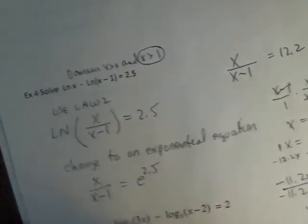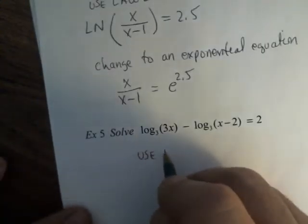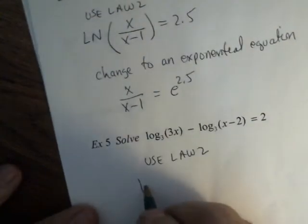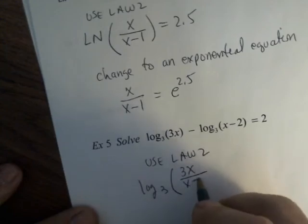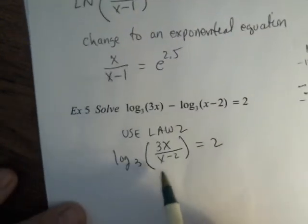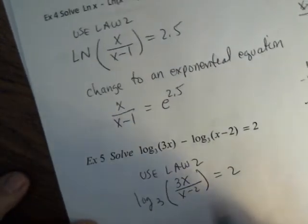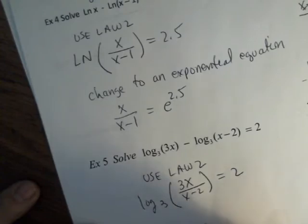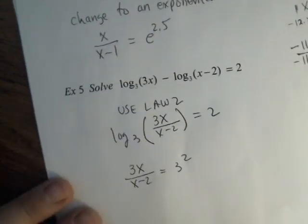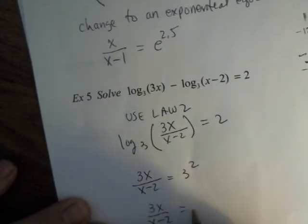Let's look at another one. All right. So, our next example, we do have another difference, which means we're going to use law 2. And I'm going to take my numerator over my denominator using law 2 to write 1 log. Now, I'm going to change to the exponential equation. So, 3x over x minus 2 is 3 squared. Can't forget your base. 3x over x minus 2 is 9.